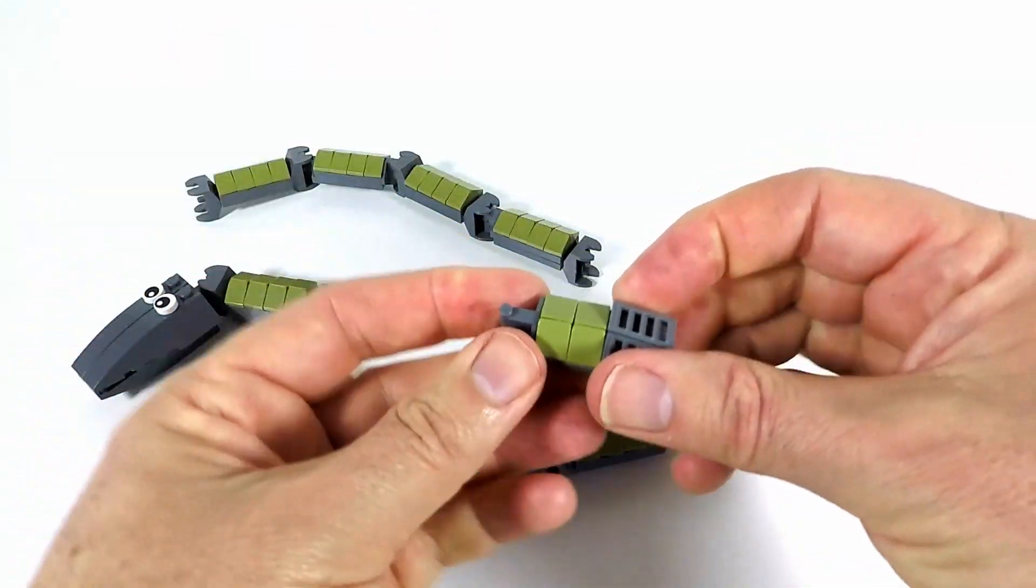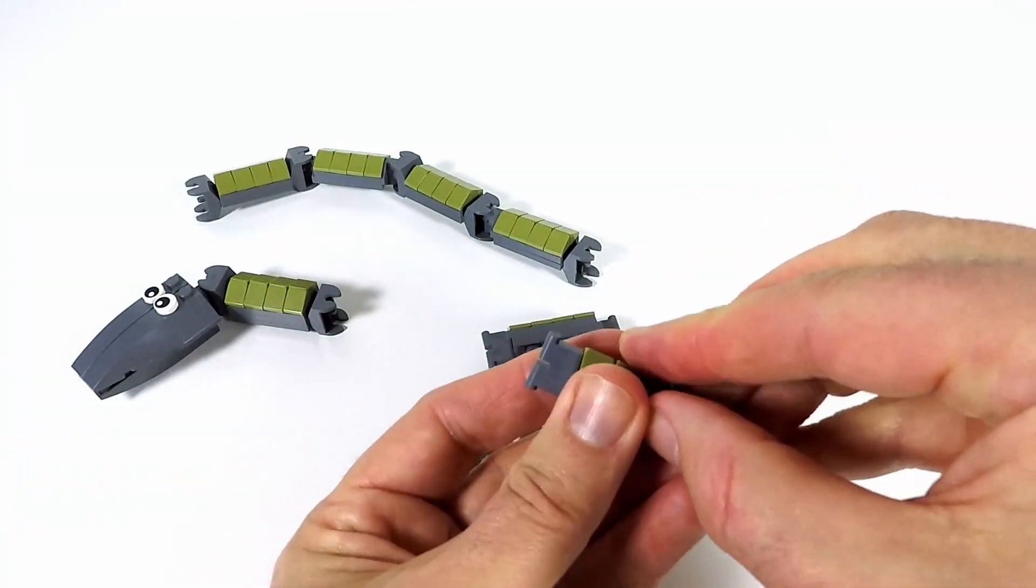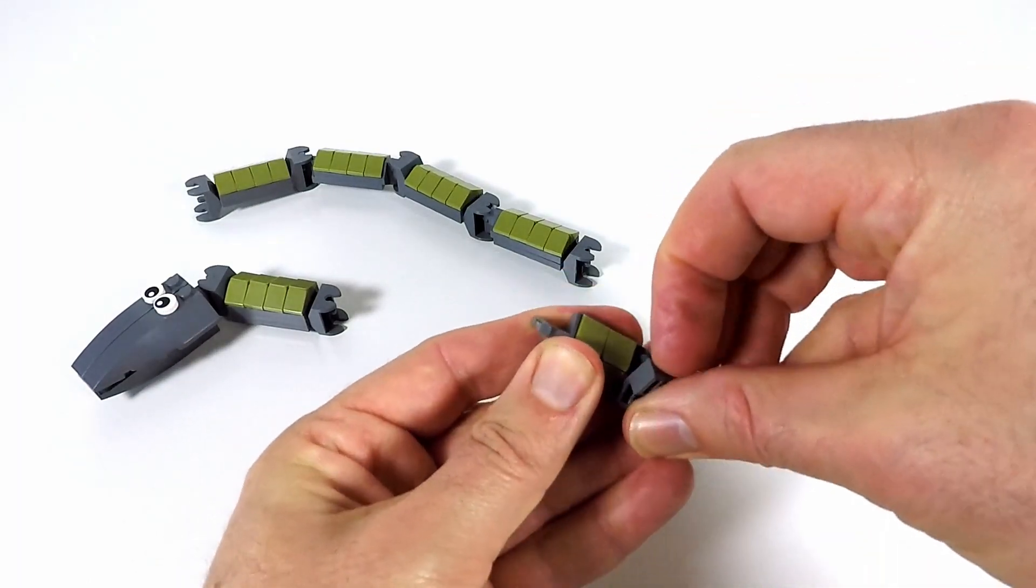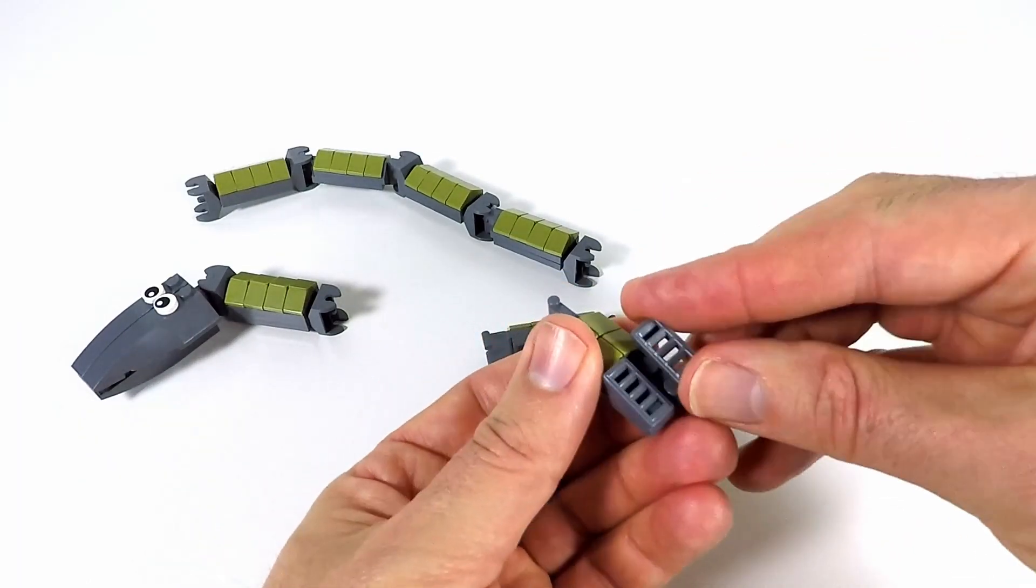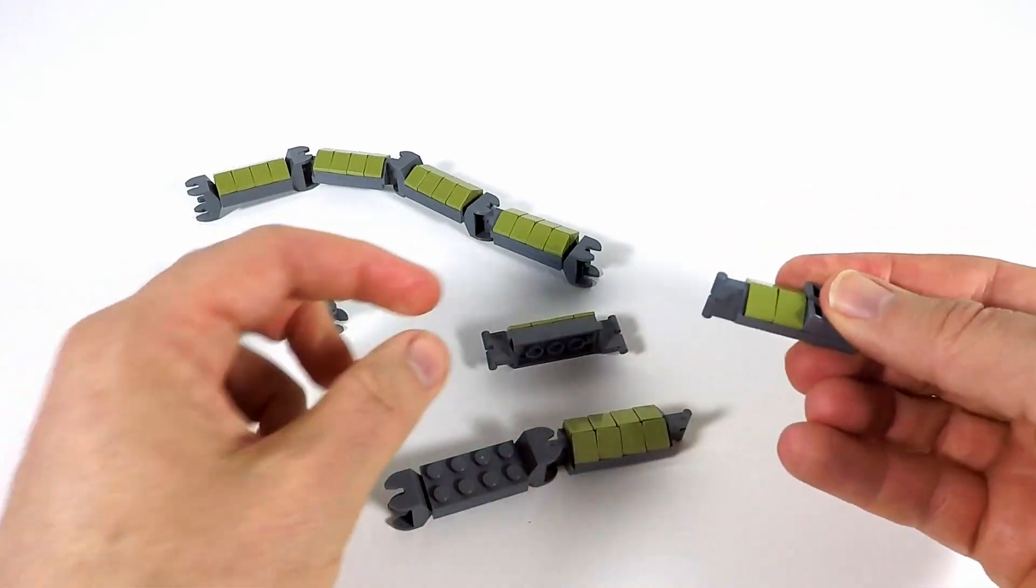And we've just used four of those one by one slopes and we're using some of these one by two ramps just to finish off the tail and give it like a little rattler.